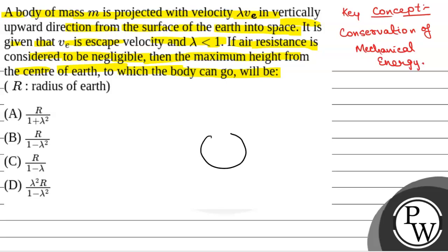Now suppose this is the center of the earth and the radius of the earth is given R. Now a body is projected vertically upwards, so the maximum height which it can go is, let it be h. This is the maximum height.